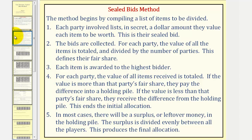The method begins by compiling a list of items to be divided. Step one: each party involved lists in secret a dollar amount they value each item to be worth. This is their sealed bid.